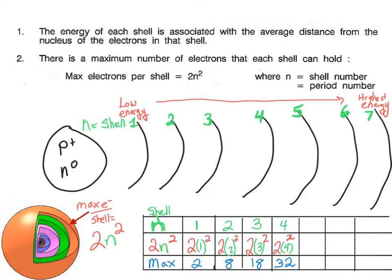And in the fifth shell, we have 2 times 5 squared, which is 50. And for this class, that's as far as we go. We stop at the fifth shell.